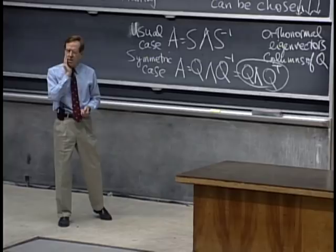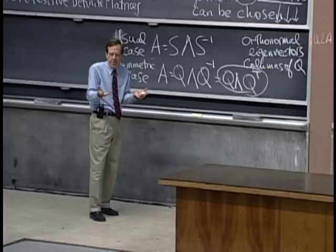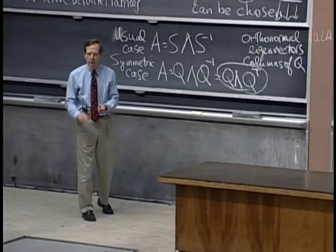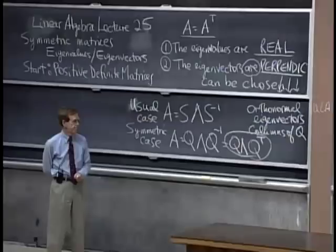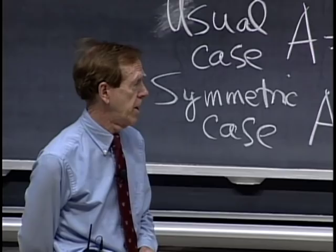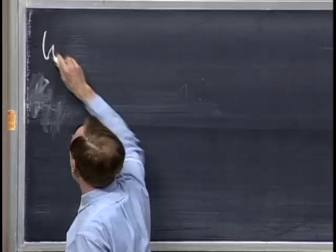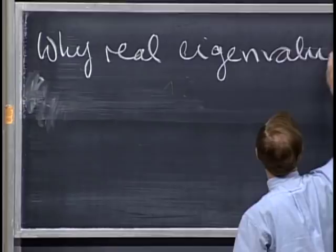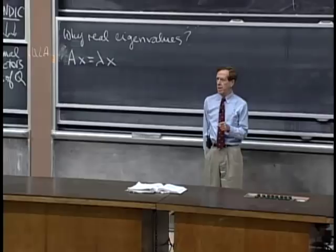Now I'd like to say why the eigenvalues are real. Starting from AX equals lambda X — as far as we know, lambda could be complex and X could be complex. Even A could be complex. One thing we can always do is take the complex conjugate of everything: A-conjugate times X-conjugate equals lambda-conjugate times X-conjugate. A plus IB conjugated gives A minus IB, and products behave correctly — you can conjugate every factor.